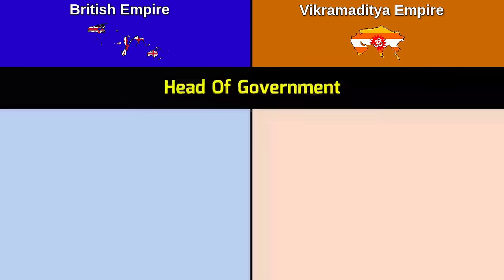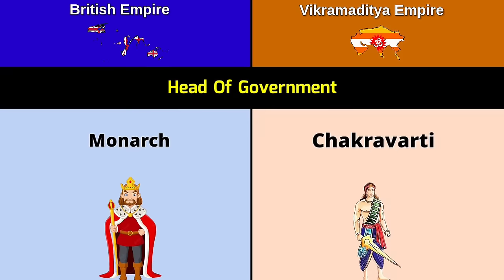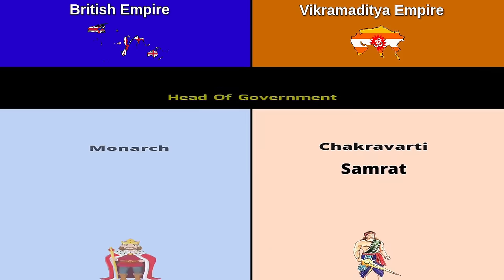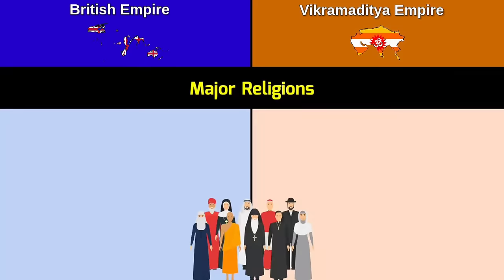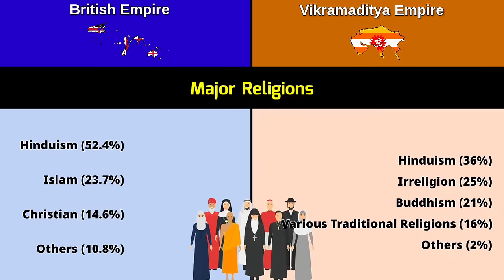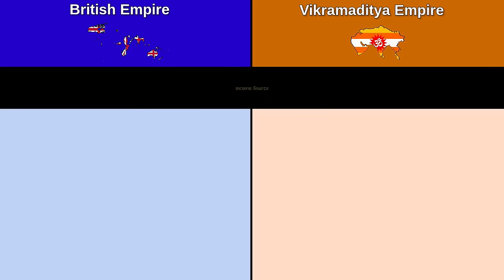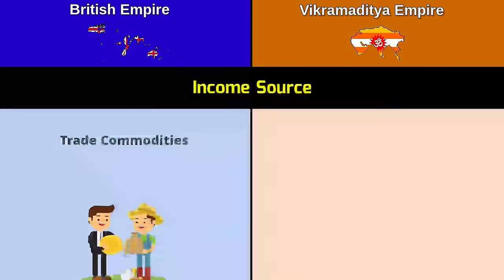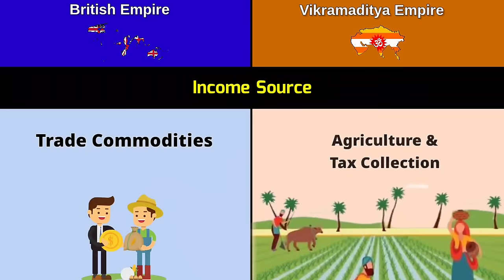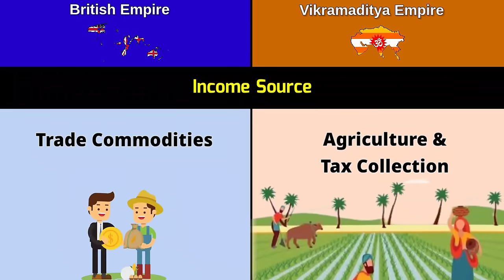Head of government: British Empire — Monarch; Vikramaditya Empire — Chakrabarti or Samrat. Major religions: Hinduism dominated both empires. Income source: trade commodities for the British Empire; agriculture and tax collection for the Vikramaditya Empire.